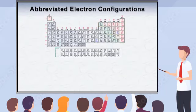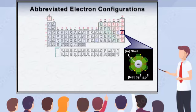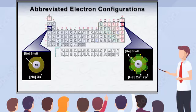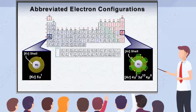Electron configurations for elements are often depicted as the filled shell of the preceding noble gas, plus any other electrons that exist beyond the closed shell, as you see on your screen. Each time an octet is achieved, a valence shell is filled. In each element of the periodic table following a noble gas, the new electron goes into the next higher energy level, corresponding to the S-orbital in the next period.